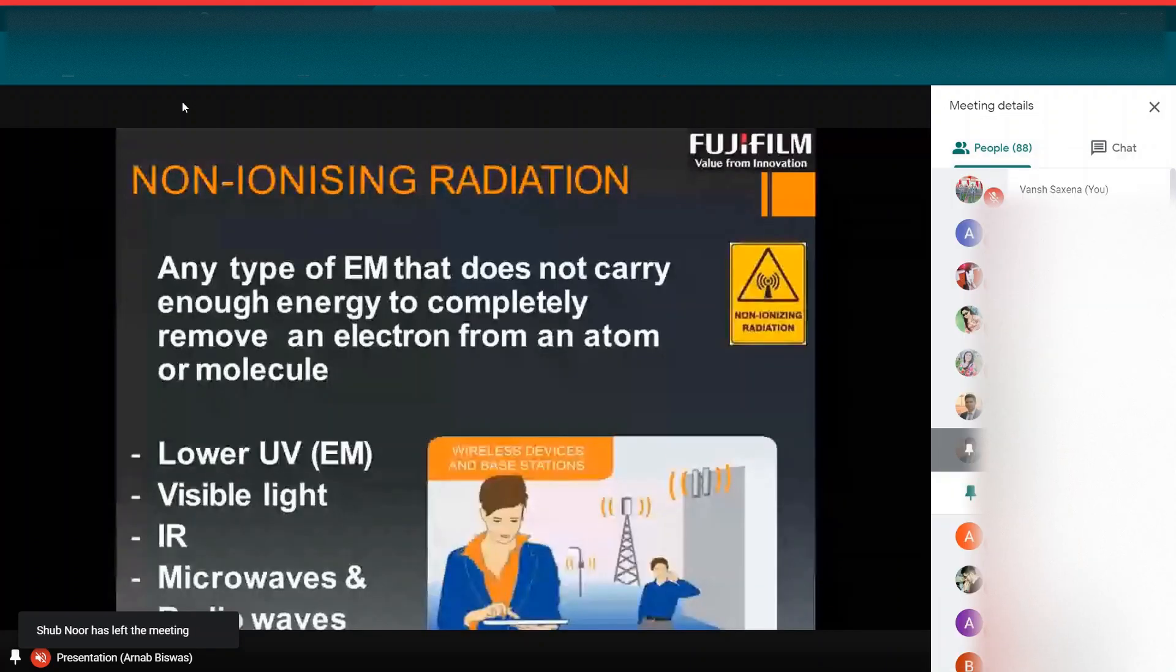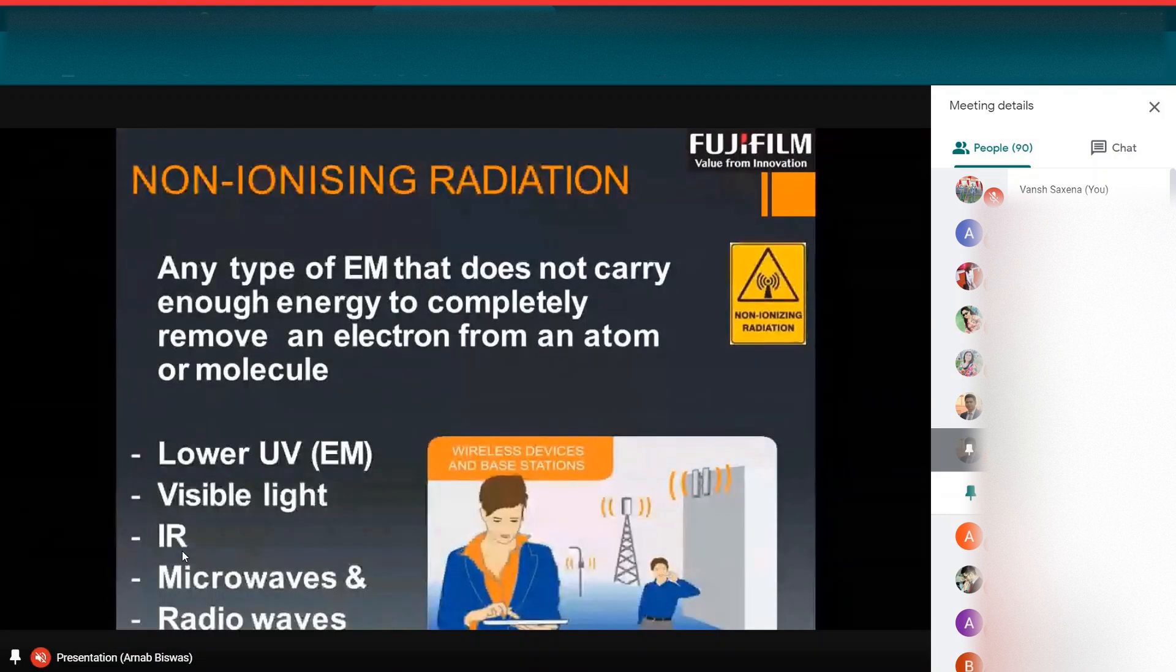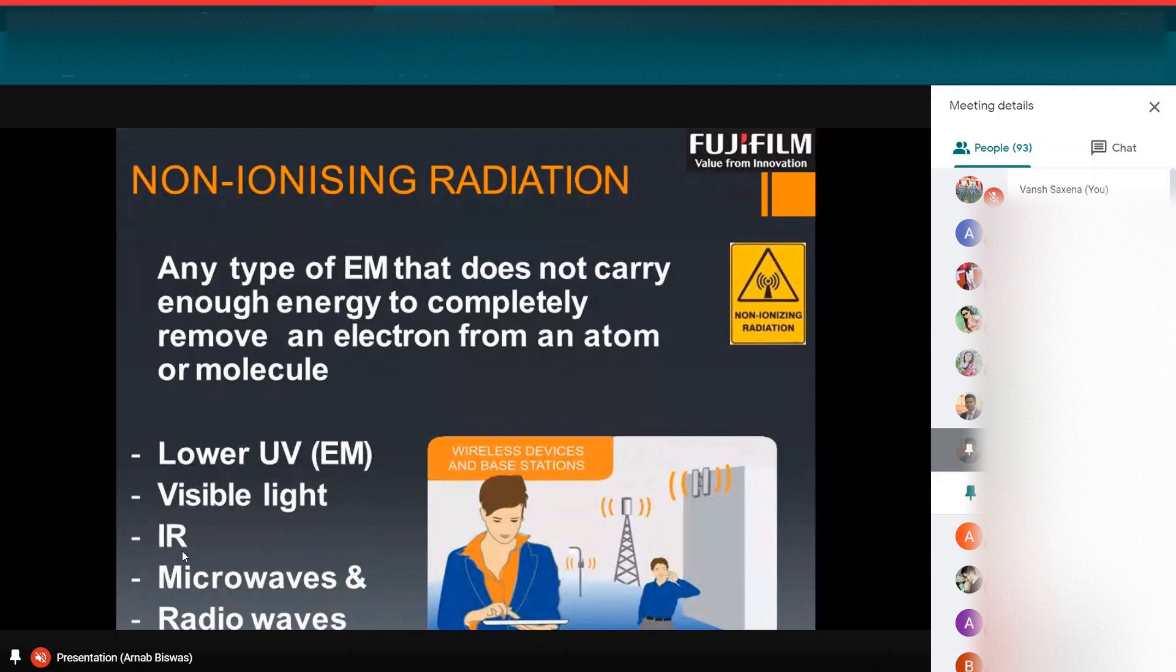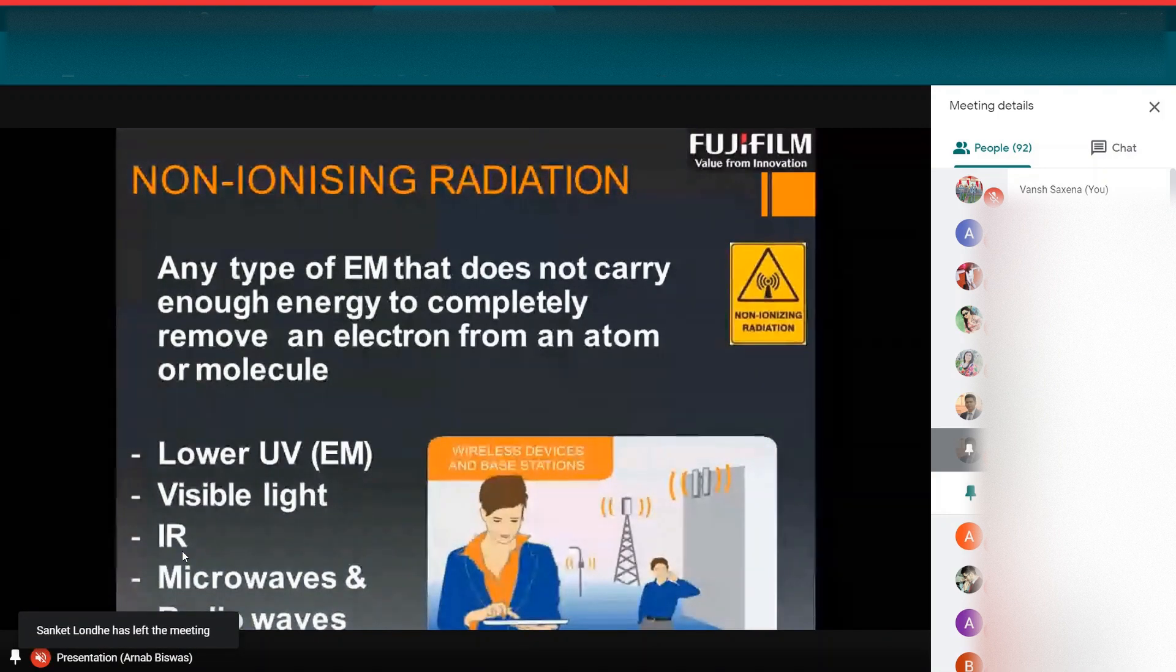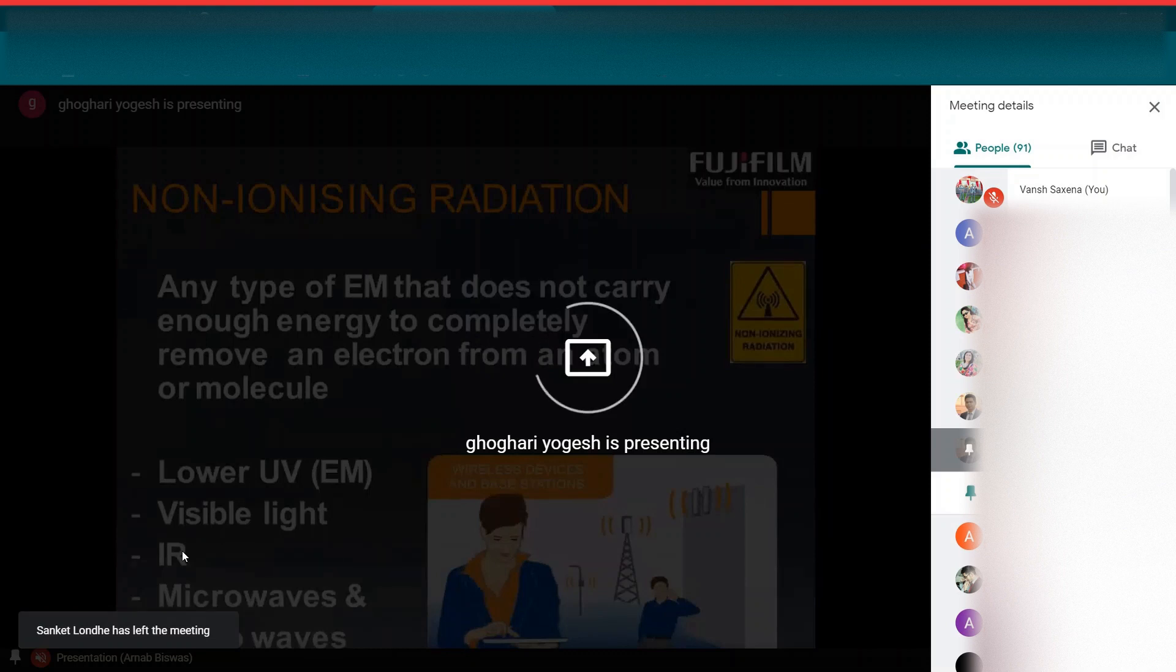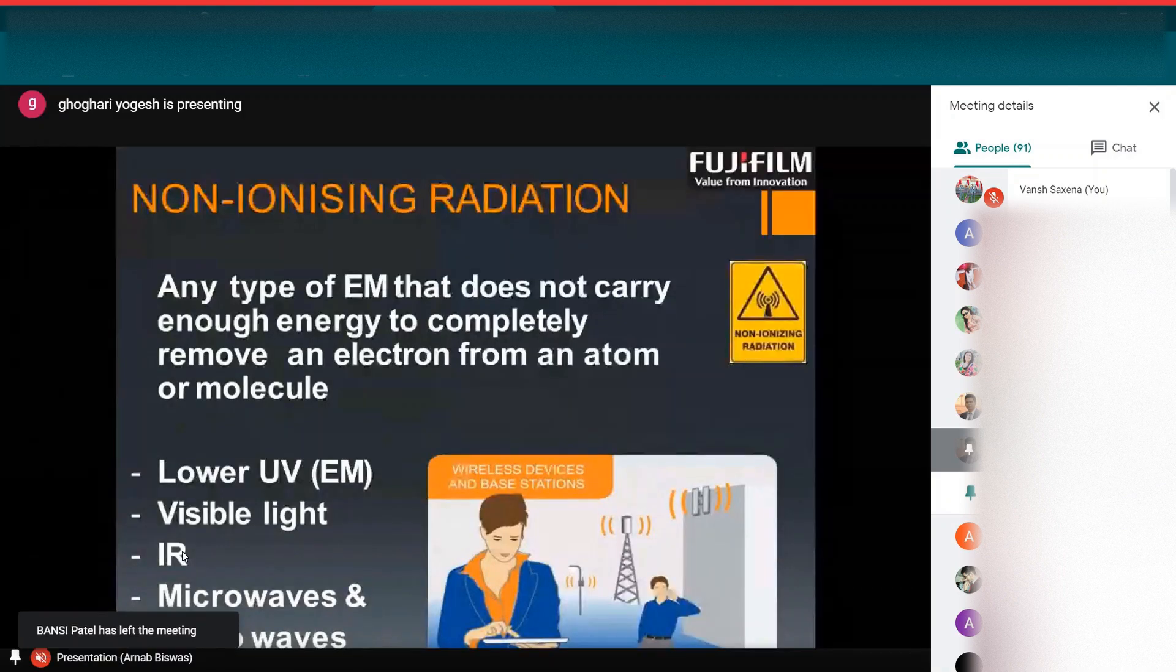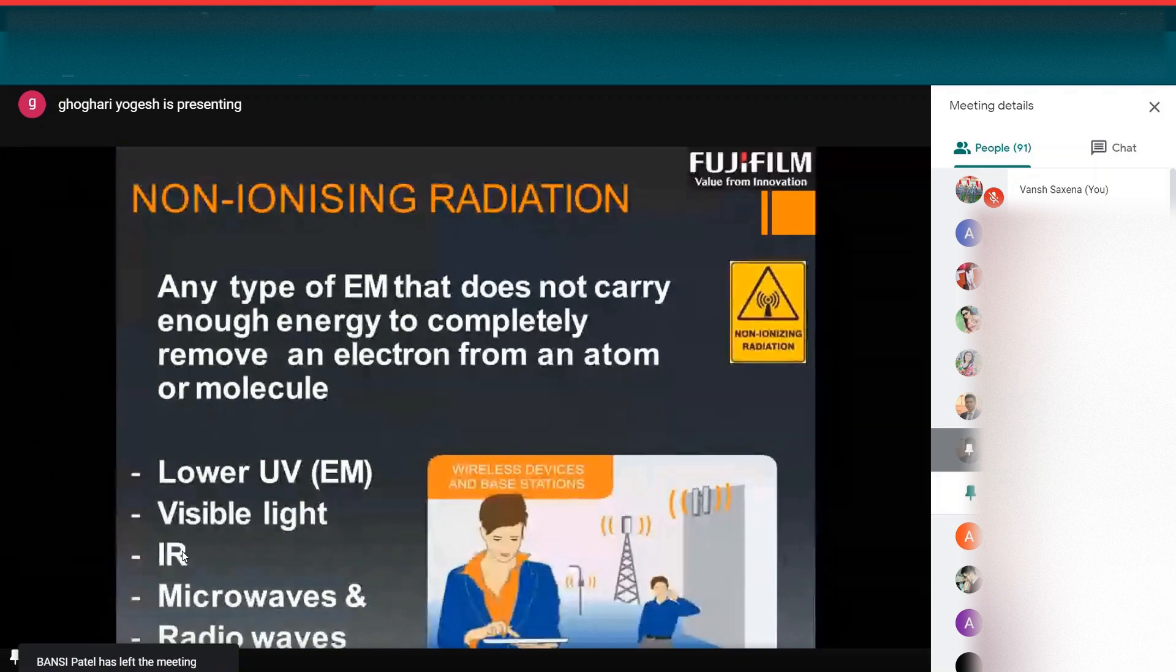What is non-ionizing radiation? Any type of electromagnetic wave that doesn't carry enough energy to completely remove an electron from an atom or molecule. So this non-ionizing radiation is not harmful for our body as it doesn't have much energy to completely remove an electron from an atom or molecule. The different types of non-ionizing radiations are lower ultraviolet, infrared ray, microwaves, radio waves, etc.